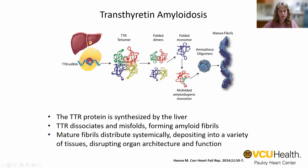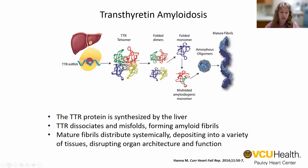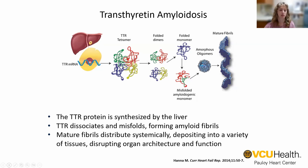Transthyretin, or TTR amyloidosis, involves a protein that everyone has in their body. This protein is made by the liver, and in its stable form, it transports vitamin A and thyroxine throughout the body. This protein can become unstable for two different reasons — either from aging or from having a hereditary mutation. When the protein becomes unstable, it falls apart and tries to put itself back together, but when it does so, it folds up incorrectly, thereby forming amyloid fibrils. These fibrils deposit in various places throughout the body, disrupting organ structure and function.